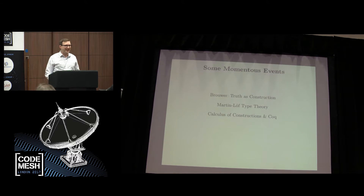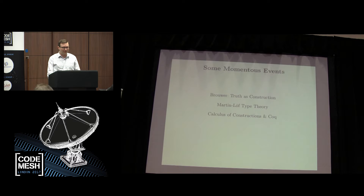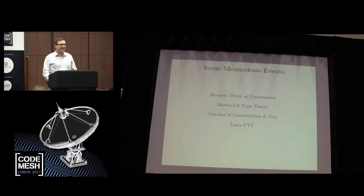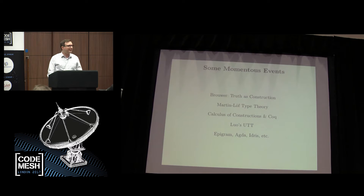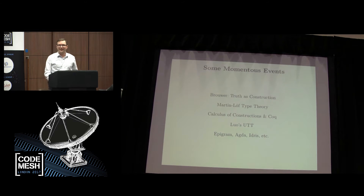Meanwhile, in France, we got the calculus of constructions. There's been a lot of cross-fertilization between the calculus of constructions and Martin-Löf type theory, which culminated in the type theory behind a system called Lego — UTT, which I believe was short for Universal Type Theory — and that's the system behind very powerful things like Epigram and Agda and even Idris. These are all implementations of UTT behind the scenes. And work continues: we have cubical type theory, homotopy type theory, all these wonderful things.